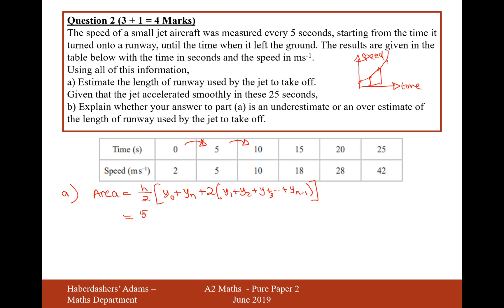h will be 5, so it's 5 over 2. And then y0 is this one here, that's 2. yn is this one up here, in this case n is 1, 2, 3, 4, 5, 6, so n is 6. This is y6, so it's 2 plus 42 plus 2 lots of 5 plus 10 plus 18 plus 28.